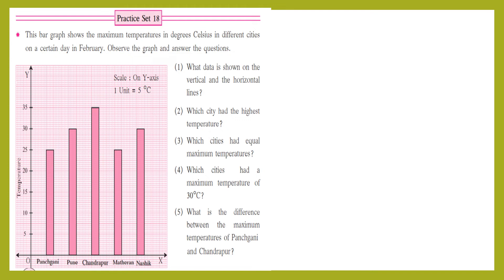Practice Set 18. In the month of February, observe the graph and answer the questions. Dear children, we need to observe the graph and answer the questions given alongside. Let's understand this graph first — we can see an x-axis and a y-axis, and 5 rectangles in pink color.